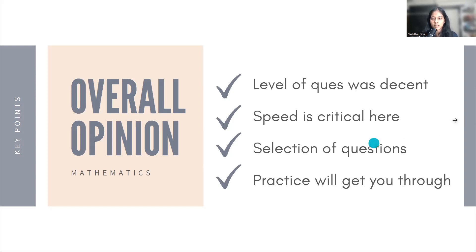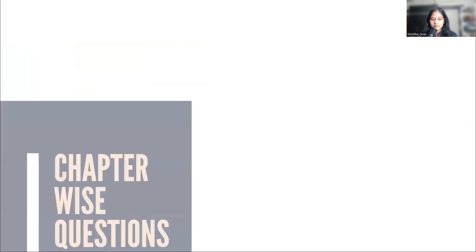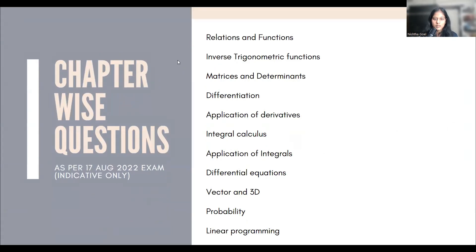Now let's see chapter-wise what questions came. As per 17 August exam, first is Relations and Functions. Relations and functions was quite important in the paper with four to five questions. One-to-one, onto functions related questions were there, types of relations questions were there - symmetric, transitive, reflexive. You were given a set and had to identify if it's an equivalent relation or not.